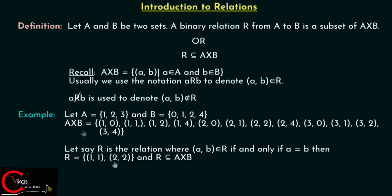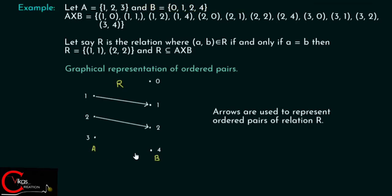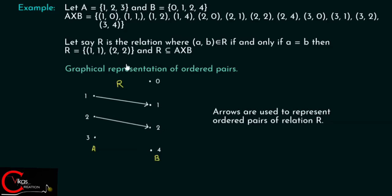Now let's see the graphical representation of these ordered pairs. I have listed all the elements of set A on one side and all the elements of set B on the other side — {1, 2, 3} on the left and {0, 1, 2, 4} on the right. Arrows are drawn to represent the ordered pairs of relation R. This arrow represents the ordered pair (1,1) and this arrow represents the ordered pair (2,2). This whole mapping is relation R.